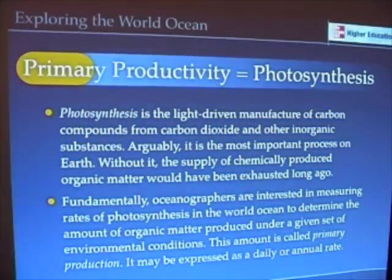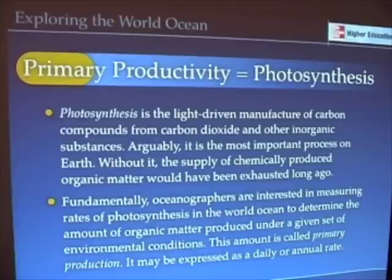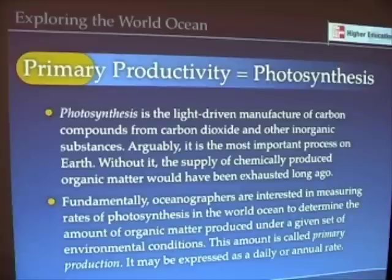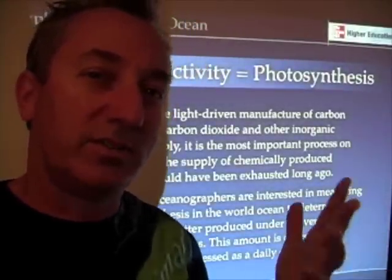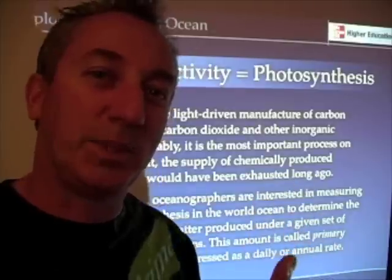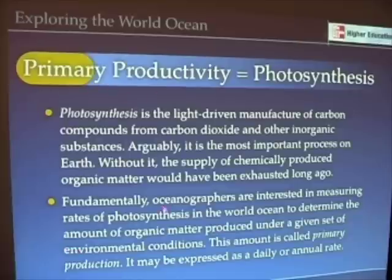Fundamentally, oceanographers want to know how much photosynthesis is happening in a particular region of the world ocean, at what rate, and how much organic matter is being produced under a given set of conditions — that amount produced is called primary production. You may encounter debates about whether to say 'productivity' or 'production' — there are whole papers and conferences on this — but usually people mean the same thing. Primary production can be expressed as a daily rate or an annual rate: the amount of carbon fixed per day or per year.